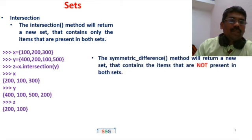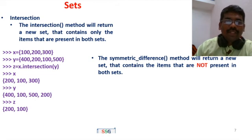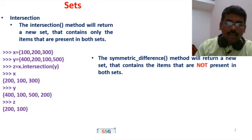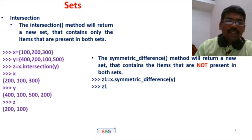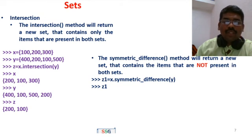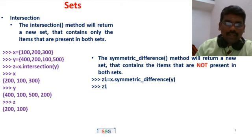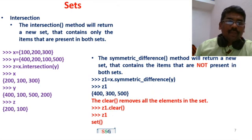The intersection syntax is: first_set.intersection(second_set). You can also store the result. Next is symmetric difference. Symmetric difference returns elements that are in either set but not in both — the unique elements. For example: X.symmetric_difference(Y) gives the unique elements from X and Y — like 300, 400, 500.